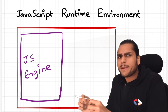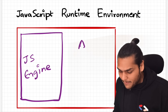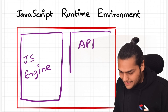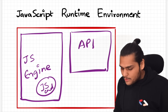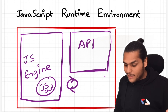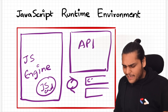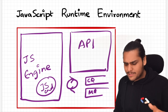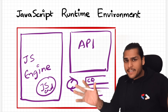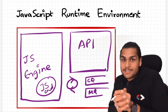It can also have a set of APIs to connect to the outer environment. We can also have an event loop inside the JavaScript runtime environment, a callback queue, and a micro task queue. So we can have a lot of things inside the JavaScript runtime environment — it's basically a container which has all the things you need to execute your JavaScript code.